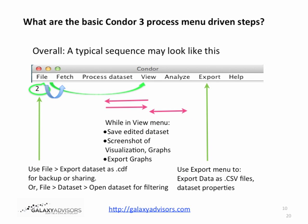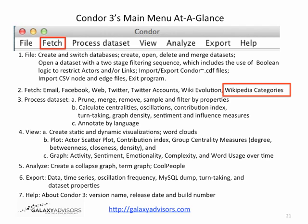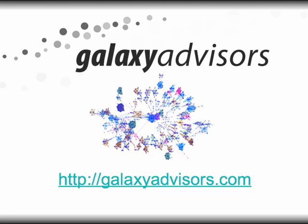To recap the basic process steps: Condor requires no programming. The typical sequence is to touch File twice, then Fetch, View, iterate back and forth between Process Dataset and Analyze, and finally Export your data. This video has helped explain the Fetch menu and the Fetch Wikipedia Categories option. We hope that Wikipedia categories provides an enhanced way to explore your area of interest and to have a wider view of the neighborhood of articles in Wikipedia that might interest you. Good luck.